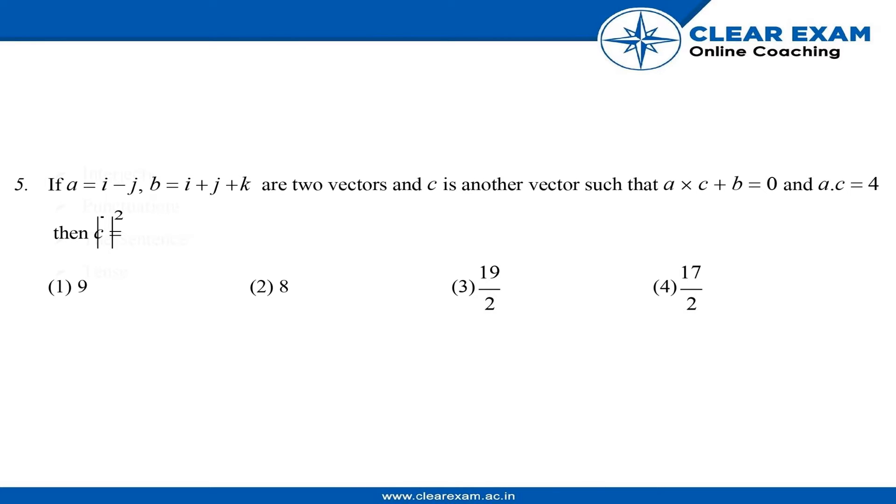Students, we would be discussing this question and solution. The question says if a is equal to i minus j and b is equal to i plus j plus k are two vectors, and c is another vector...